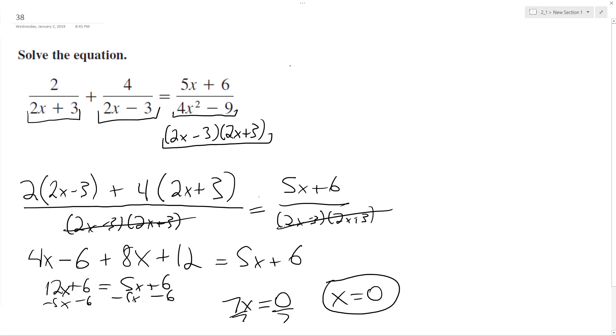And we can test that really quick. So 2 over 2 times 0 plus 3. So 2 times 0 is 0. Plus 4 over 2 times 0 minus 3, the negative 3.